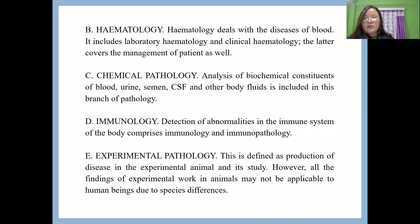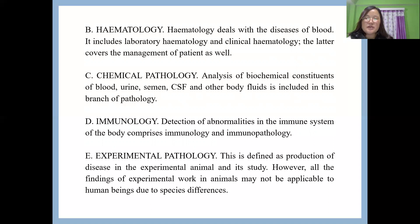The next subdivision is hematology, which is the study of diseases in relationship with blood. Chemical pathology involves studying chemical constituents in urine, CSF, semen, or any body fluid — such as concentrations of sugar, protein, albumin, or globulin — sometimes also called biochemical examinations. Immunology involves detection of abnormalities in the immune system and comes under immunological pathology.